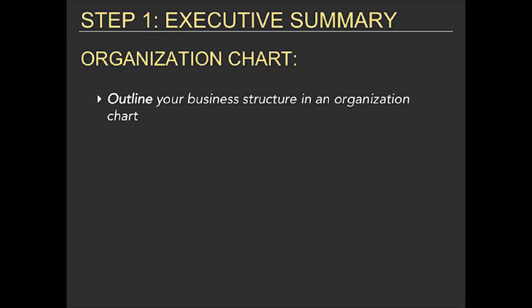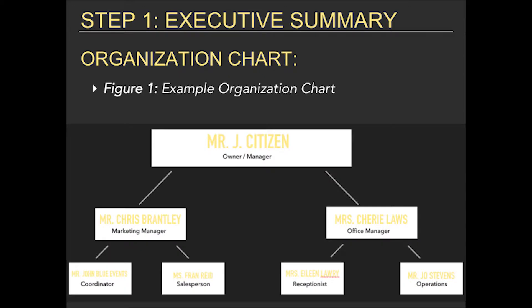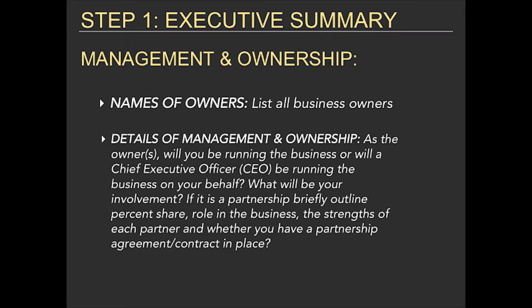Organization chart: outline your business structure in an organization chart. For example: Mr. J. Citizen as owner and manager; Mr. Chris Brantley as marketing manager; Mr. John Blue as events coordinator; Miss Friend Reed as salesperson; Miss Sherry Laws as office manager; Mrs. Eileen Laurie as receptionist; and Mr. Joe Stevens as operations manager.